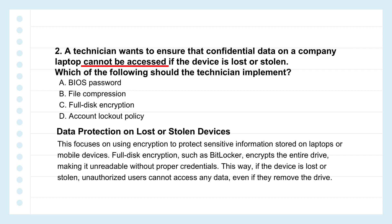That brings us to option C — full disk encryption. Tools like BitLocker on Windows or FileVault on Mac encrypt the entire hard drive. Without the right decryption key or password, all that data is just unreadable gibberish. So even if someone gets the drive out, it's useless to them. The big insight is the difference between controlling access to the operating system versus actually protecting the data itself through encryption. Passwords and lockouts control access during use, but encryption secures the data at rest — especially against physical theft.